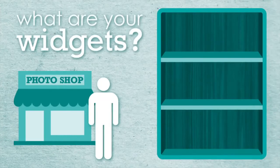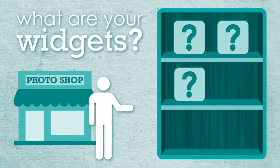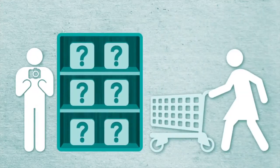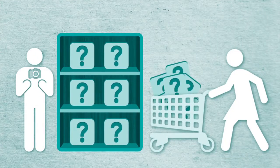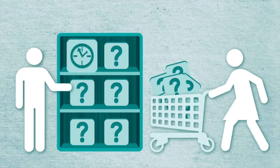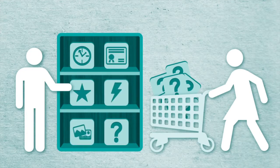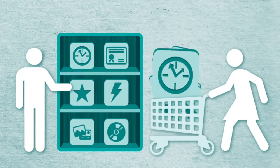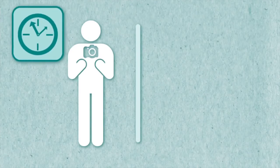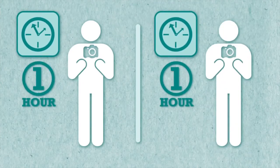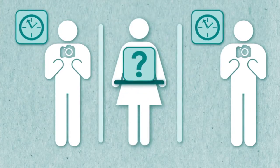So what are the widgets that you're selling? There may be more to what you're offering than you realize. When you show up for a job and take a photo, what exactly does the client get out of the deal? Let's list a few things. They get your time, your experience, a standard of quality, your style, and media of some sort like prints or a CD. Now of all of these things, the only constant is time. One hour of my time is the same as one hour of your time. An hour is an hour.